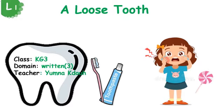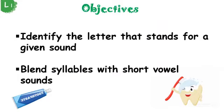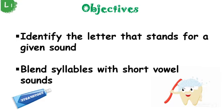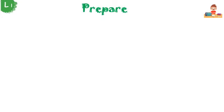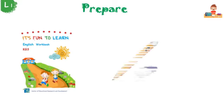Good morning again, little kids. How are you today? Let's continue with our story, a loose tooth. The objectives we're going to cover in this session are: identify the letter that stands for a given sound, and blend syllables with short vowel sounds. Prepare your workbooks and don't forget your pencils and erasers.